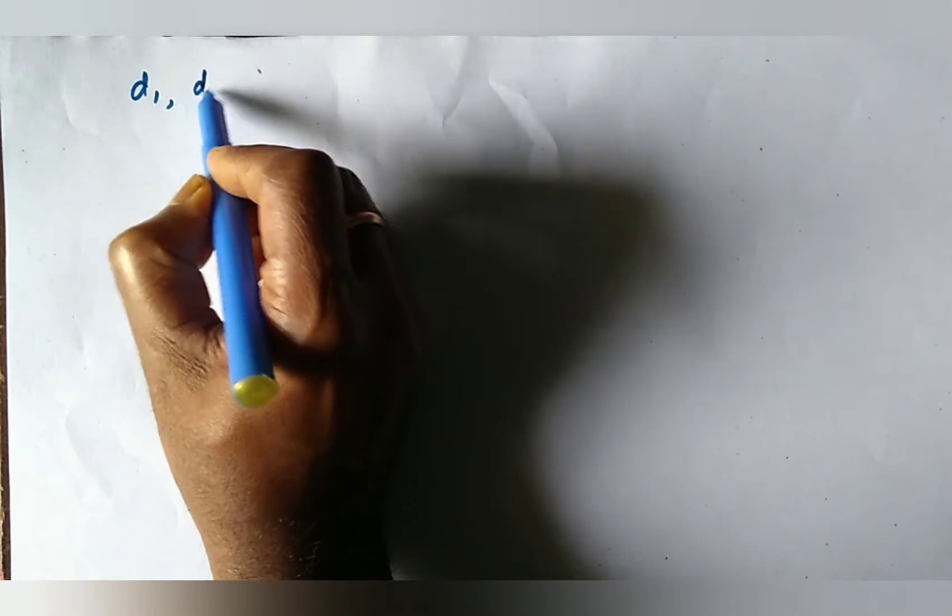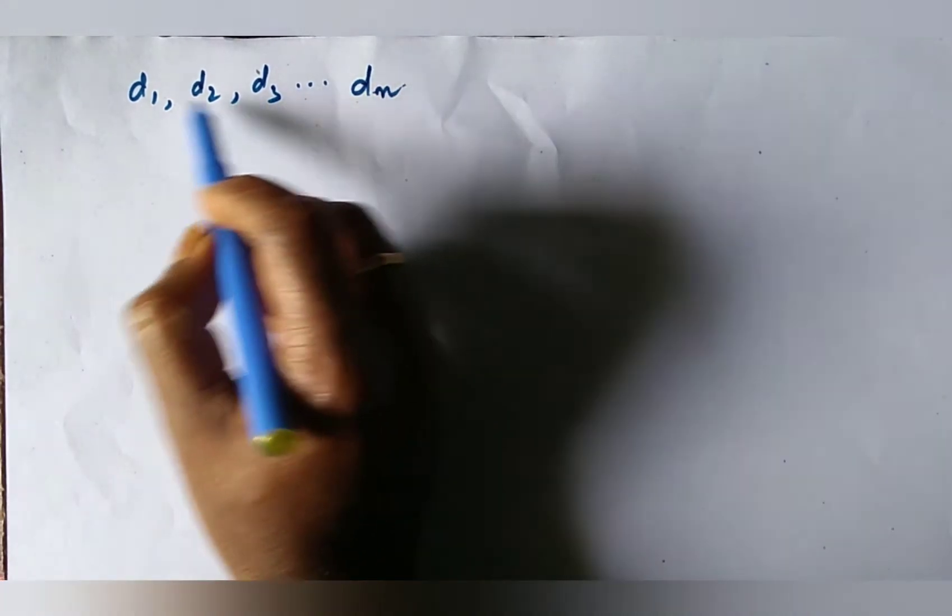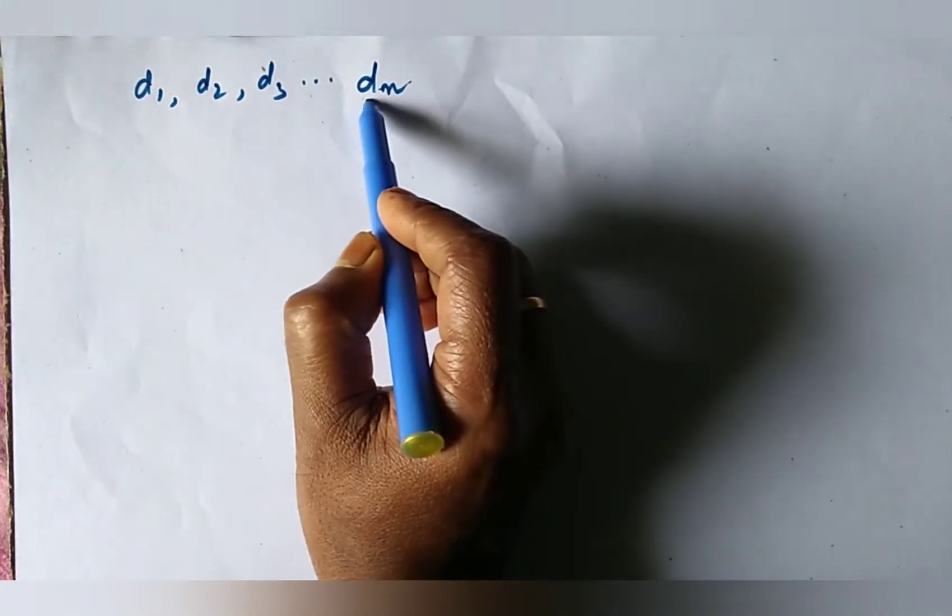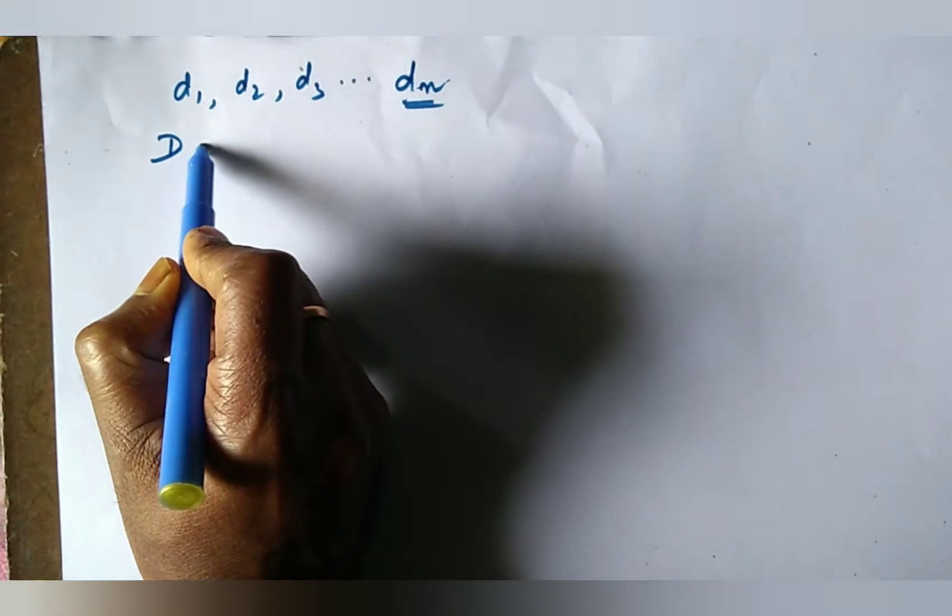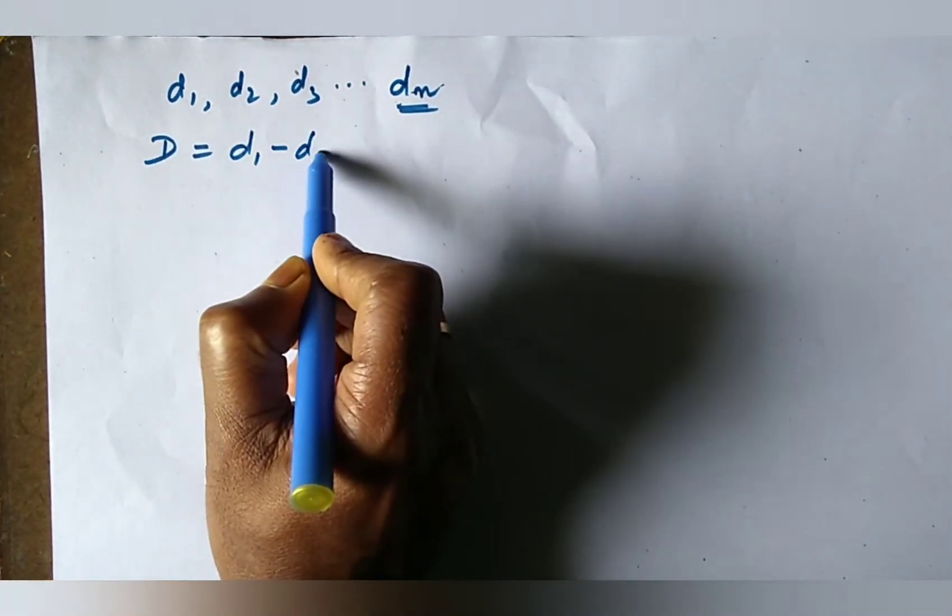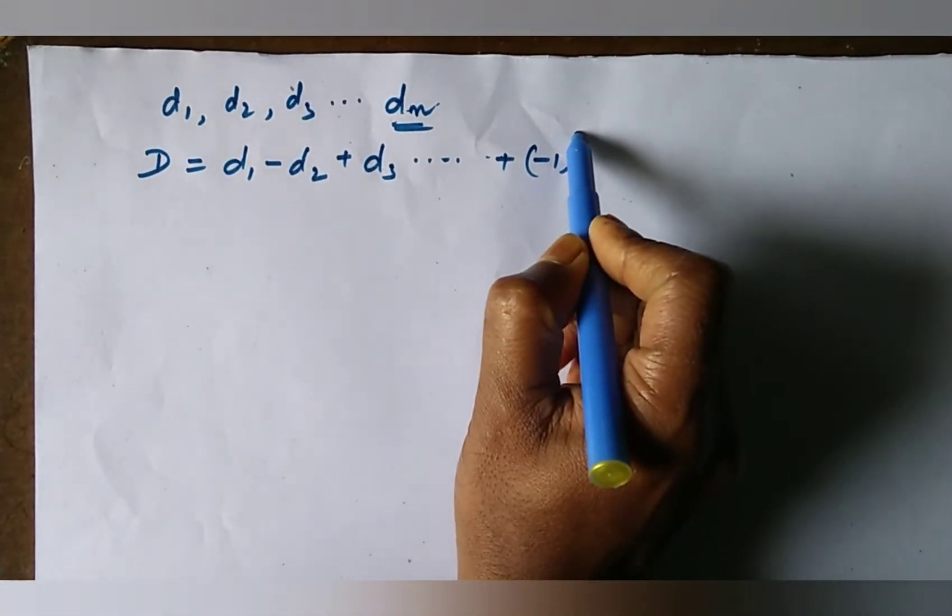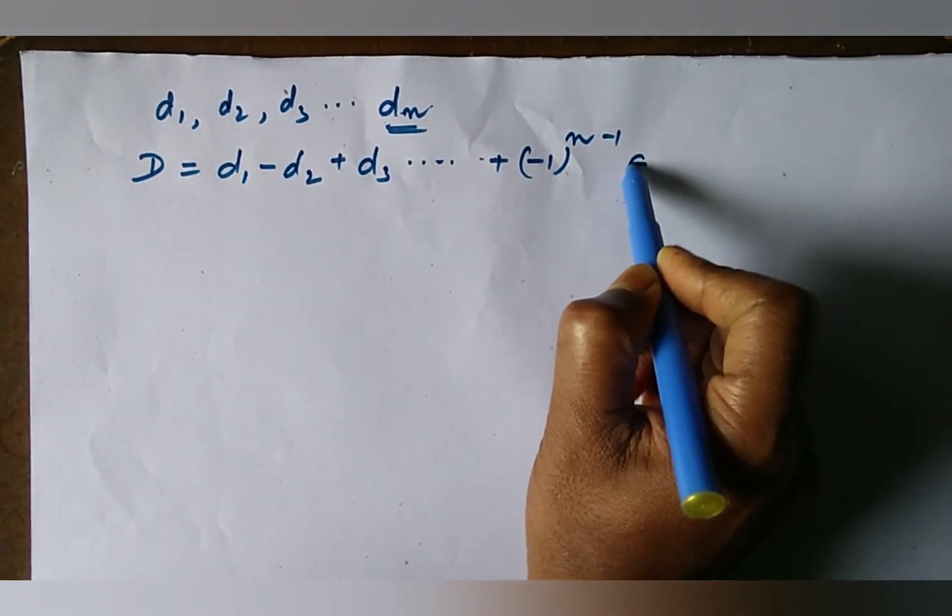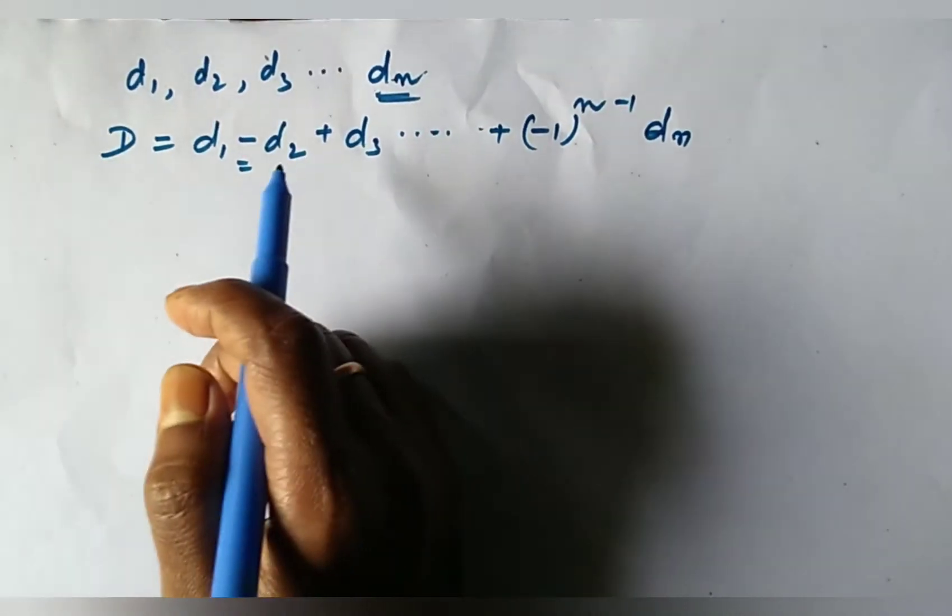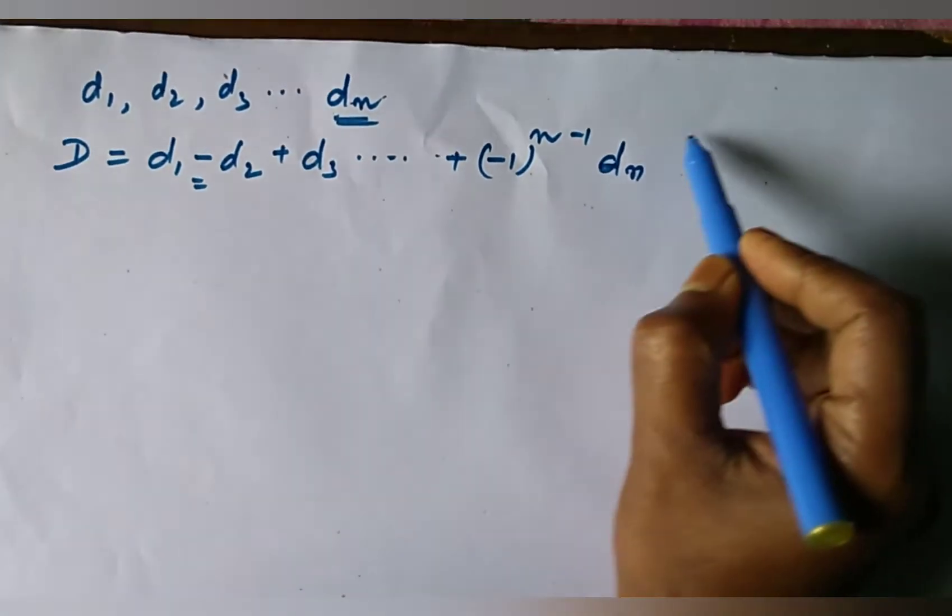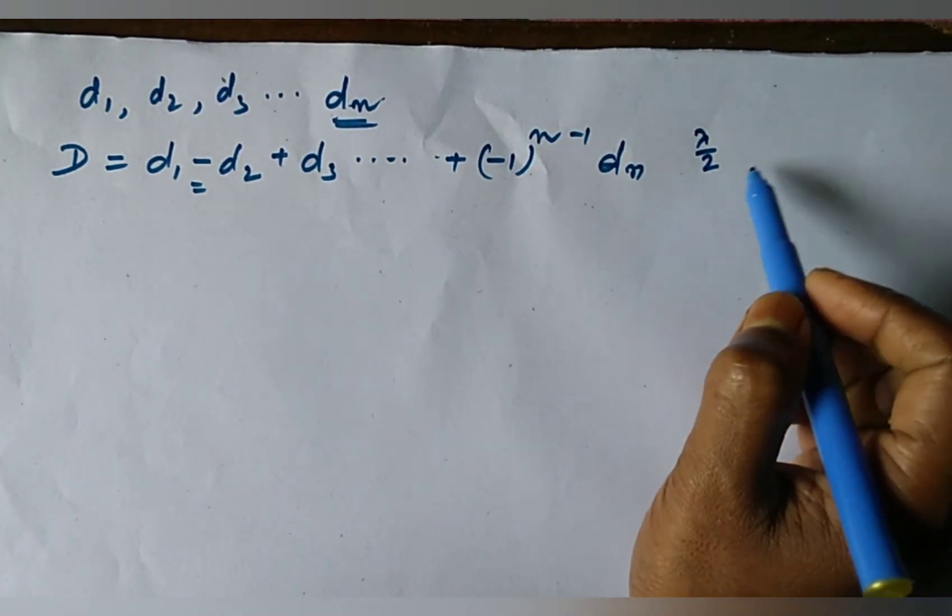If D1, D2, D3, up to Dn be the amplitudes of first, second, third, and nth half-period zones, then we may write the resultant amplitude at P: D equals D1 minus D2 plus D3 plus up to the power n minus 1, Dn. The minus sign arises because each zone is lambda by 2 further away from P than the previous one.